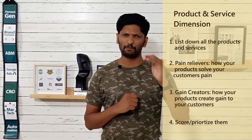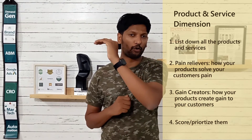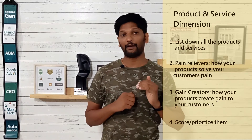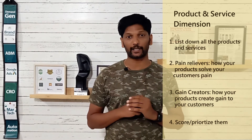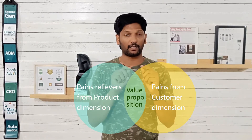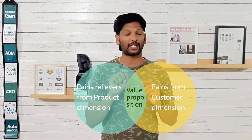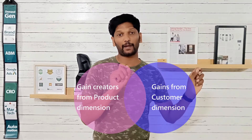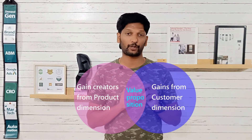Once you score them, you will know the most important pain-relieving points and the most important gain-creating points, giving you a hierarchy of features and benefits. Then all you have to do is match the two dimensions together. Where the customer's pains match your product's pain relievers — that's the sweet spot. Where the customer's expected gains match your product's gain creators — that's where the value proposition is founded.